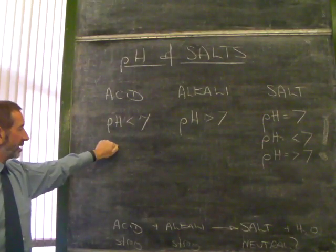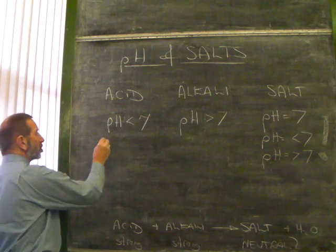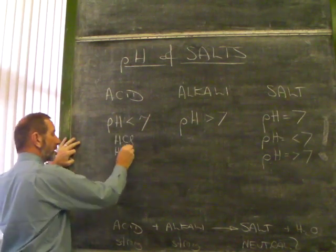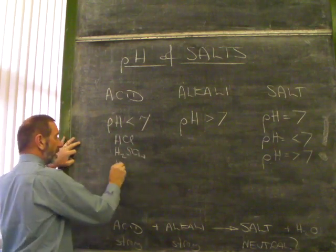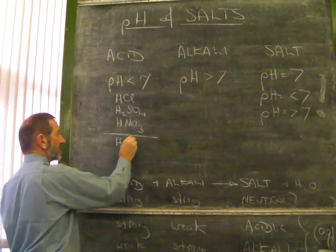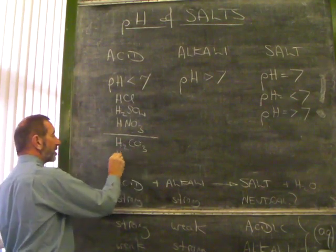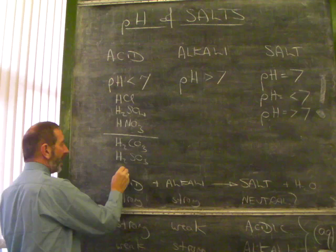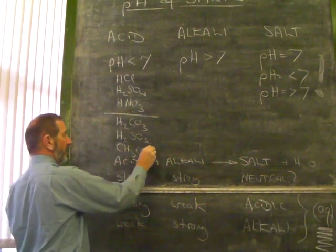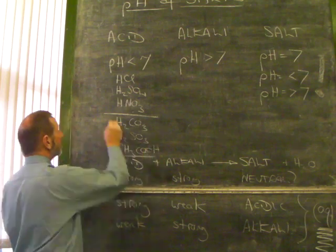Let's go back to this. Acid, alkali. We need to remind ourselves. Strong acids: hydrochloric acid, sulfuric acid, nitric acid. Weak acids: carbonic acid, sulfurous acid, and ethanoic acid. The carboxylic acids, like ethanoic acid, are weak.